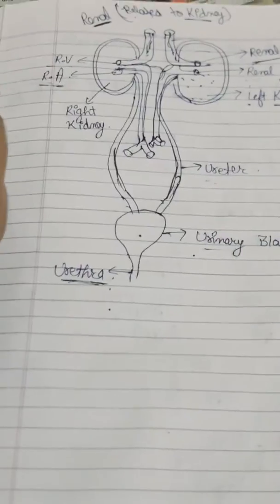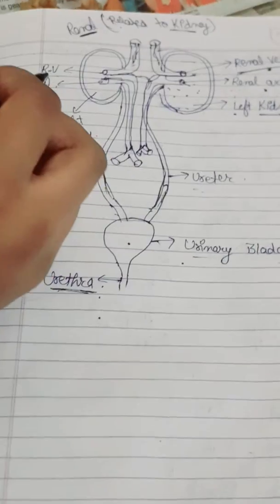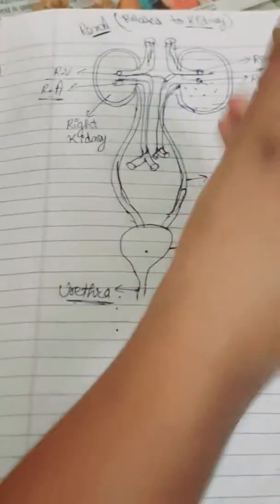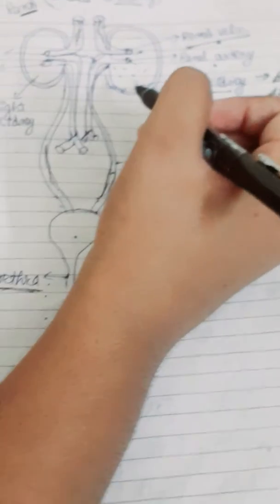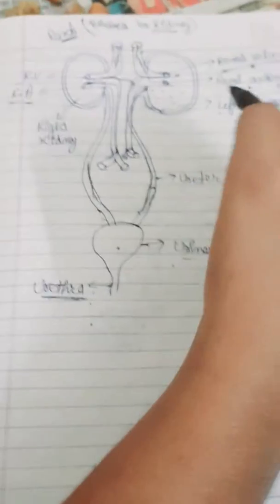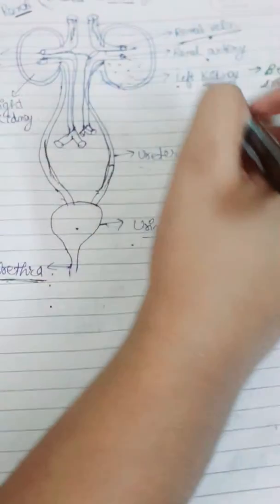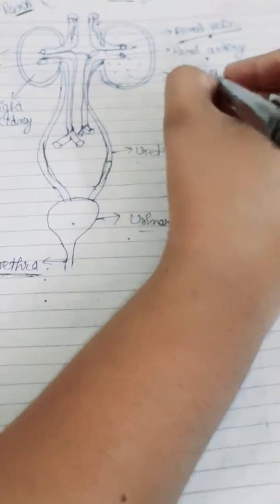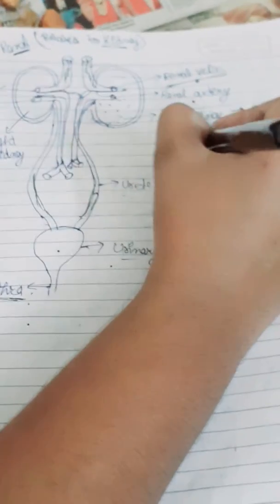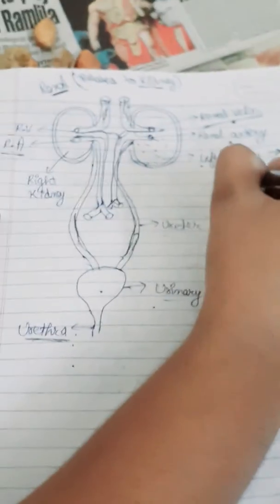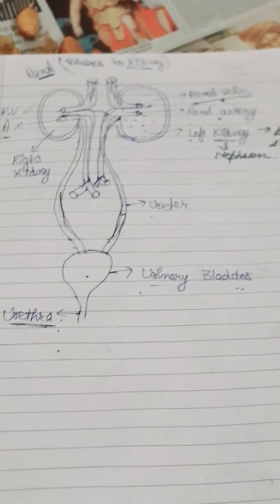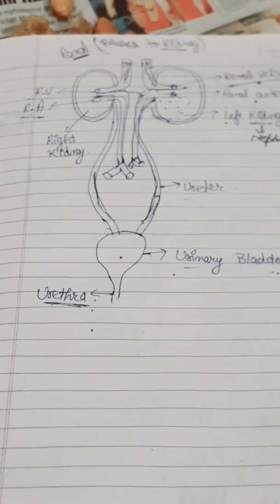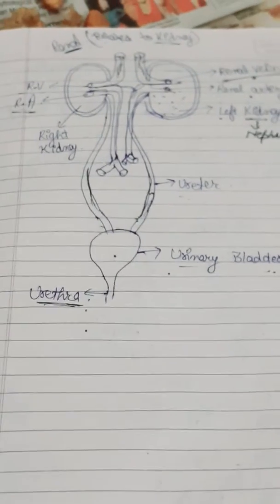A kidney contains trillions of small structures called nephrons. These nephrons have their own structure in which the purification of blood takes place. The basic unit of the kidney is the nephron.